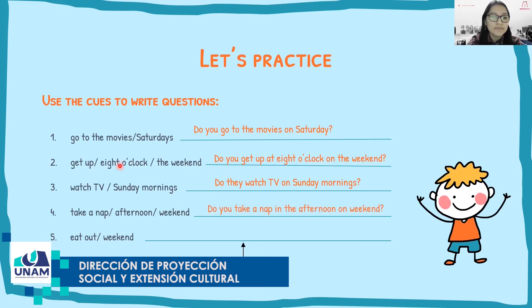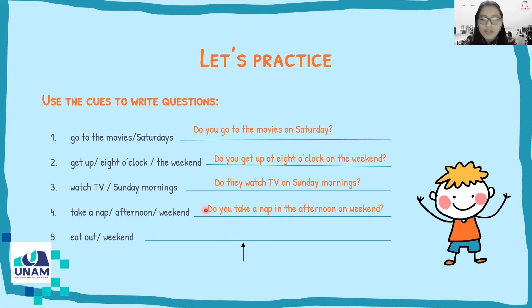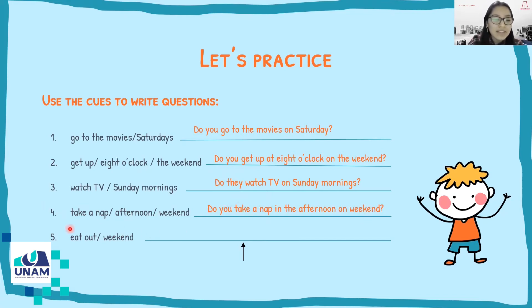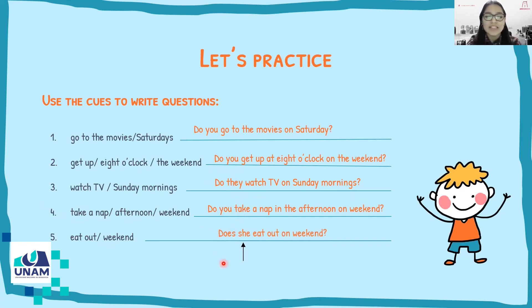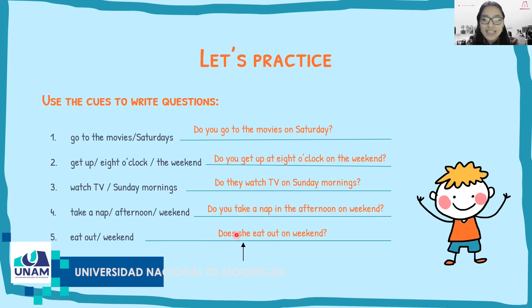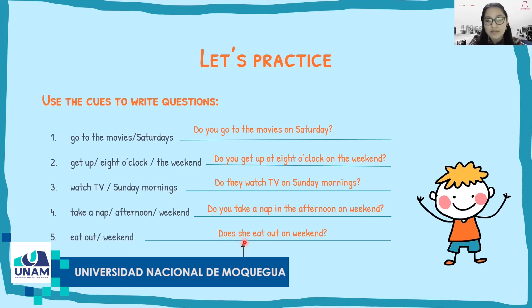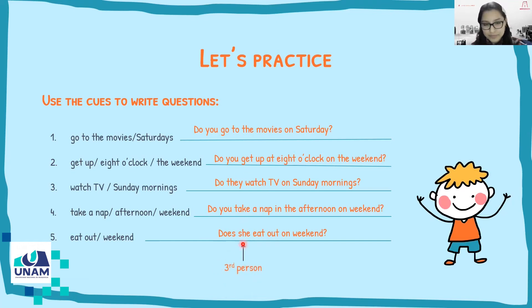Number four: 'take a nap in the afternoon on the weekend.' I use 'do': 'Do you take a nap in the afternoon on the weekend?' — auxiliary, plus subject, plus verb, plus complement. Number five: 'eat out on the weekend.' Here I use 'does' — for example: 'Does she eat out on the weekend?' I use 'does' because the subject is 'she,' third person. 'Eat out' is the verb and 'on the weekend' is the complement.